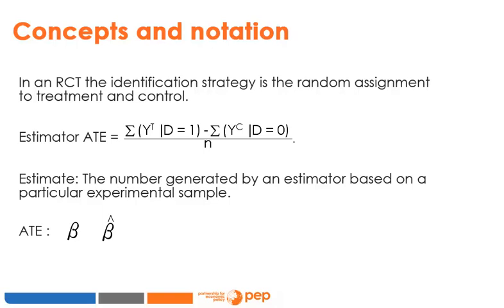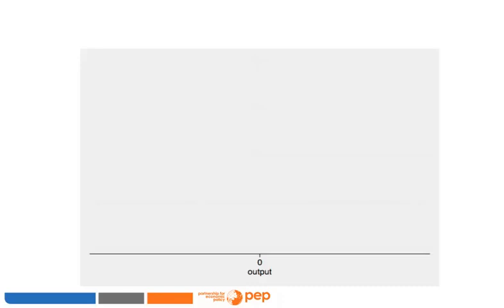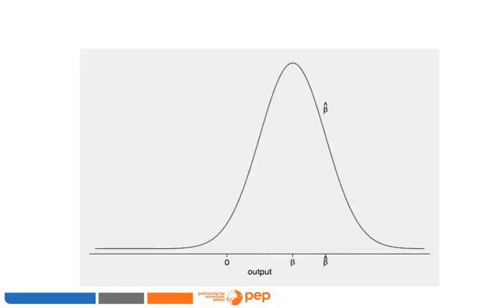The good news is that the distribution of the estimator gives us a general idea of the precision and accuracy of the single estimate we observe. This image shows the output on the real line — assume the true mean effect beta is to the right of zero, a positive effect. My estimate beta-hat is a single point, and I have no idea where beta-hat is in relation to the true mean effect beta. Luckily, statistical theory tells us that estimators are random variables with a distribution of probabilities.